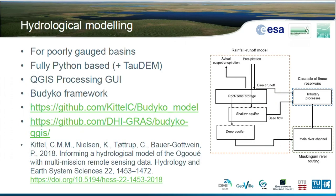The hydrological model is not really a plugin — it's more of a collection of scripts. It's fully Python-based, and we also use TauDEM for some DEM processing tasks. It has a QGIS processing GUI and is a quite simple hydrological model based on the Boudico framework — a rainfall-runoff model with a river routing component as well. It is designed for poorly gauged basins, meaning it uses not so much in-situ observation. All the data required to run the model should come from satellites, mostly rainfall data. There is a publication available if you are more interested — this was done by our colleagues from DTU, the Danish Technical University.